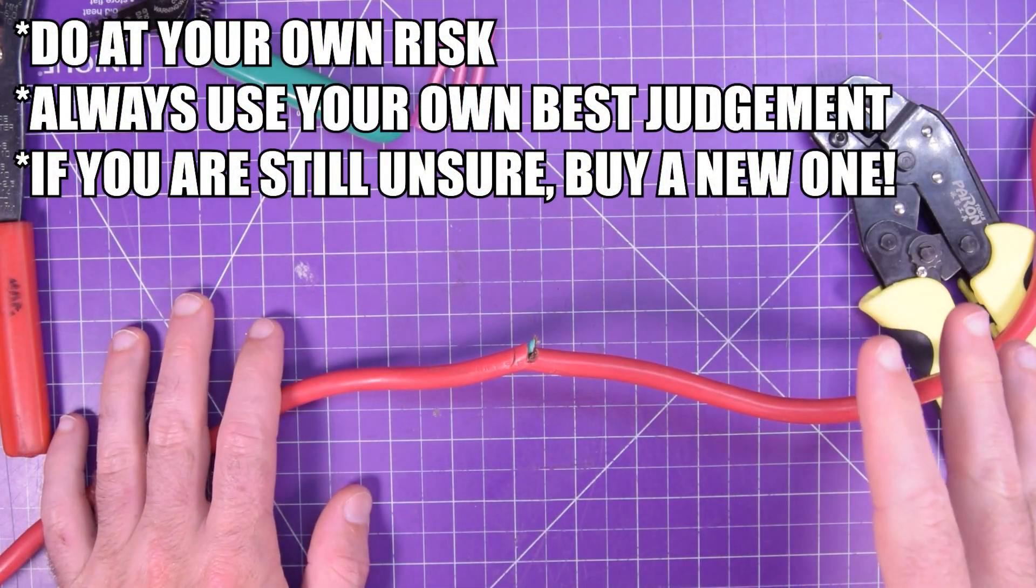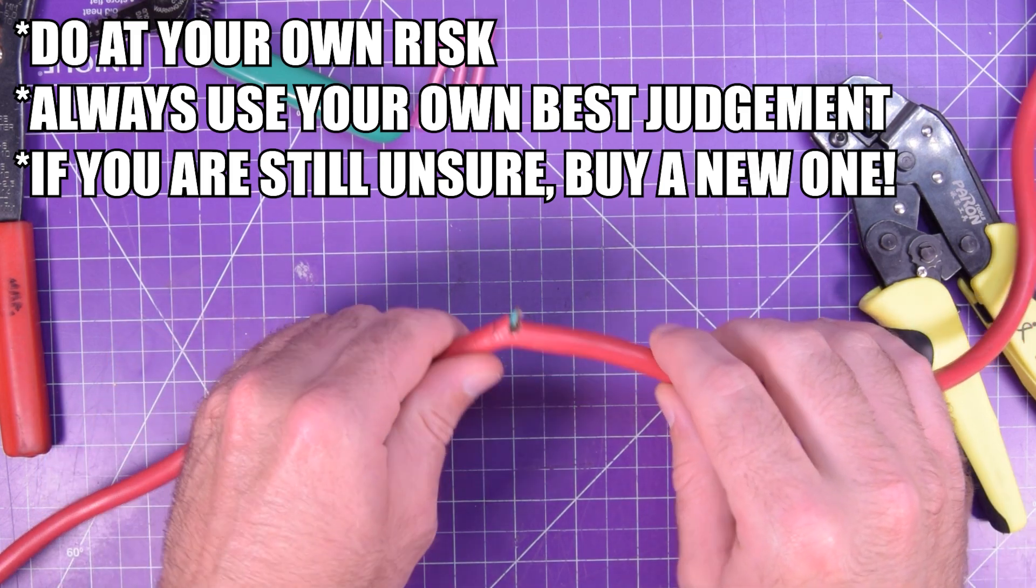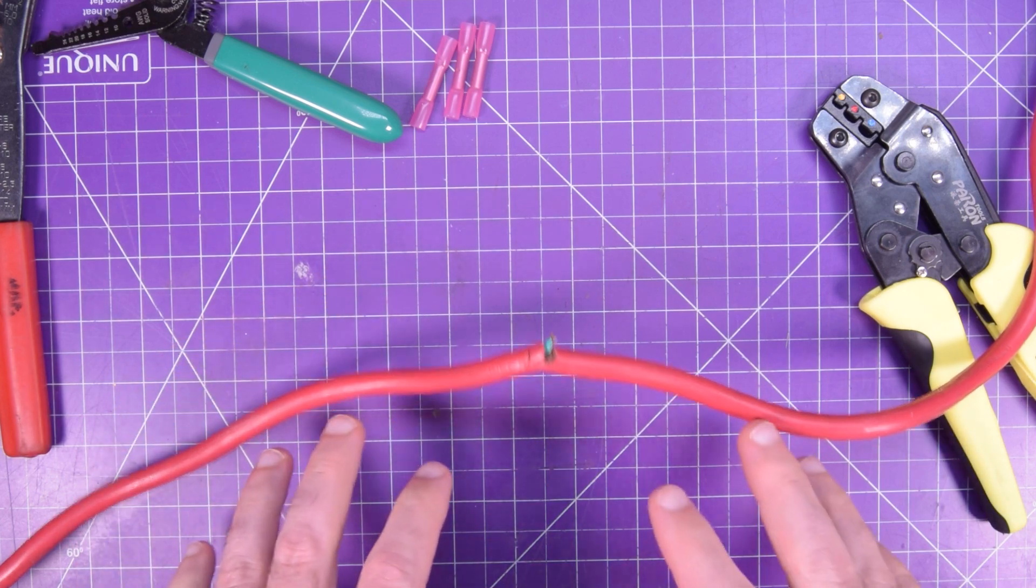Don't throw out your old extension cords. This here is a 75 foot extension cord that I found in the garbage because the ground wire got sliced by something. I'll show you how to fix it.